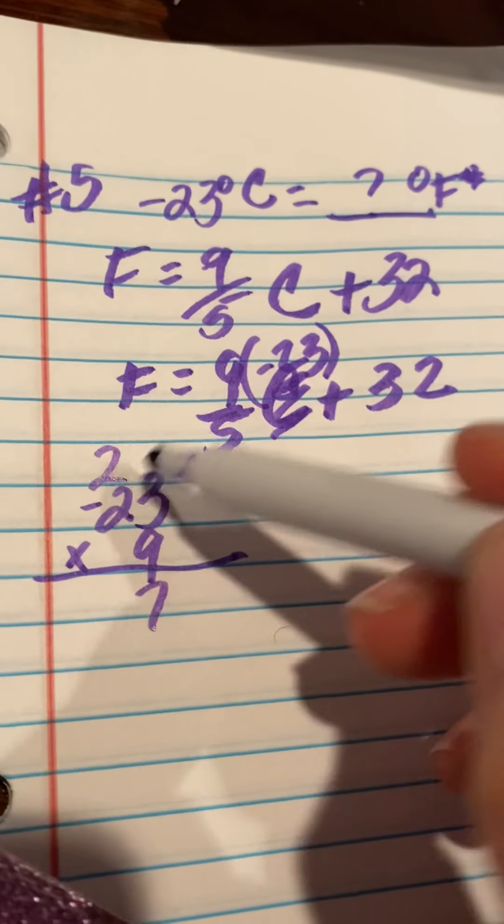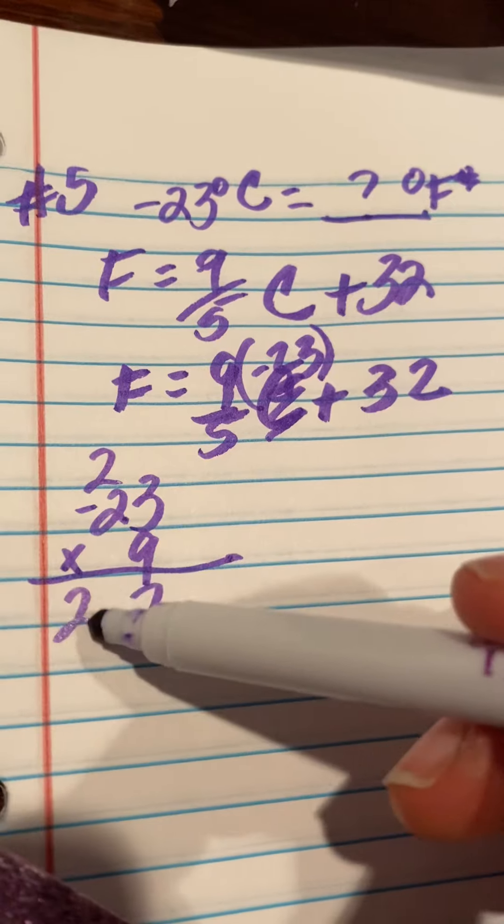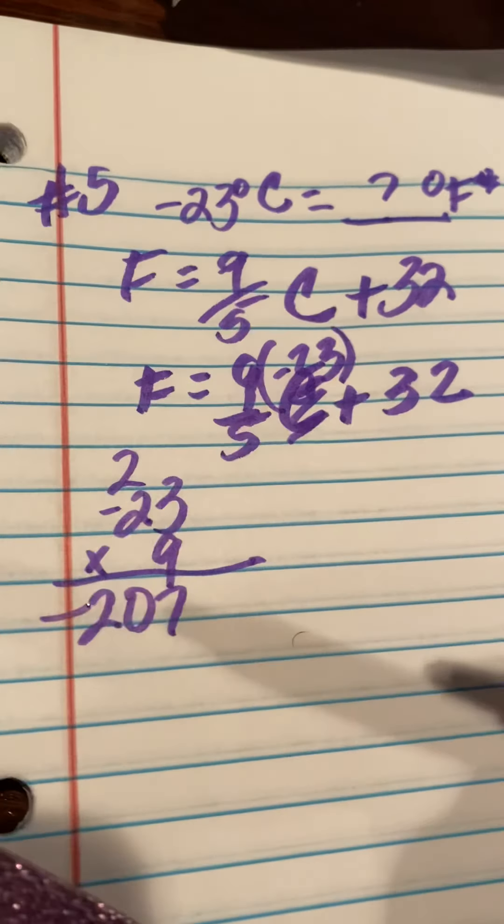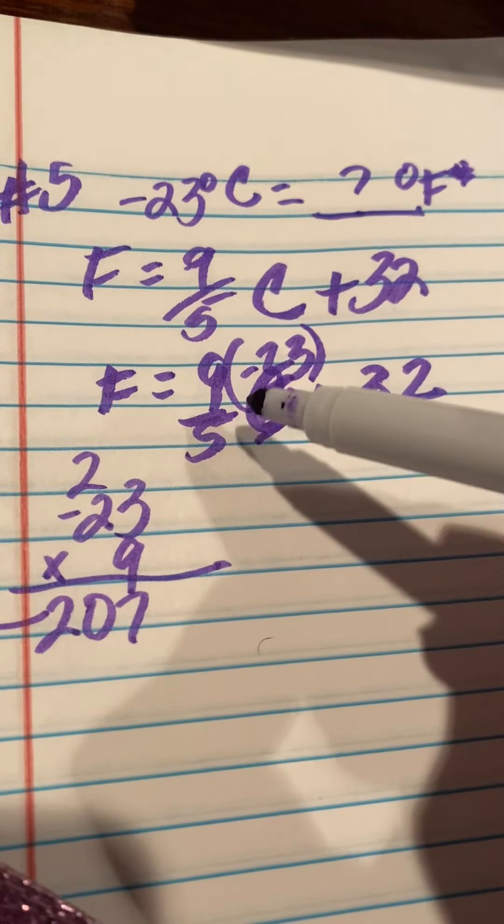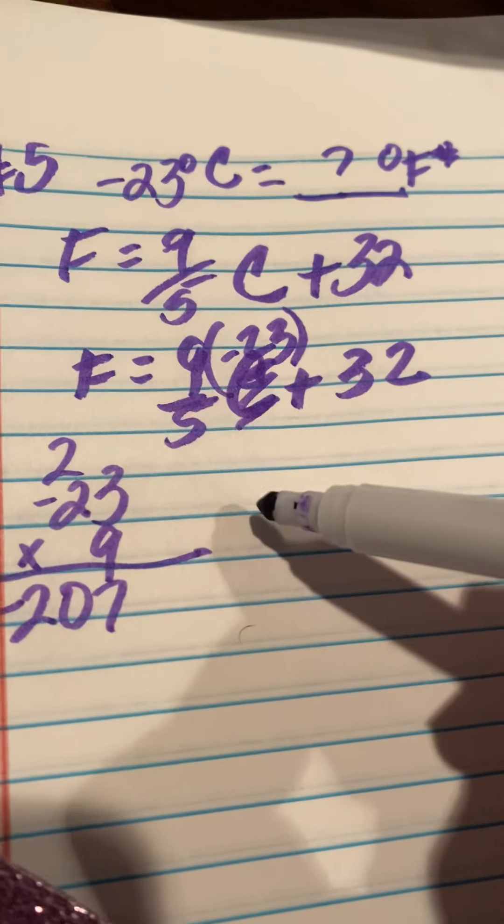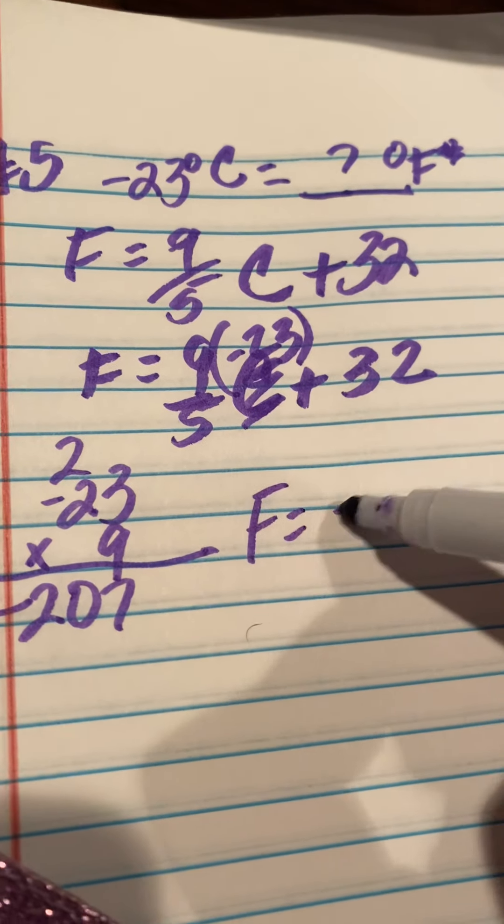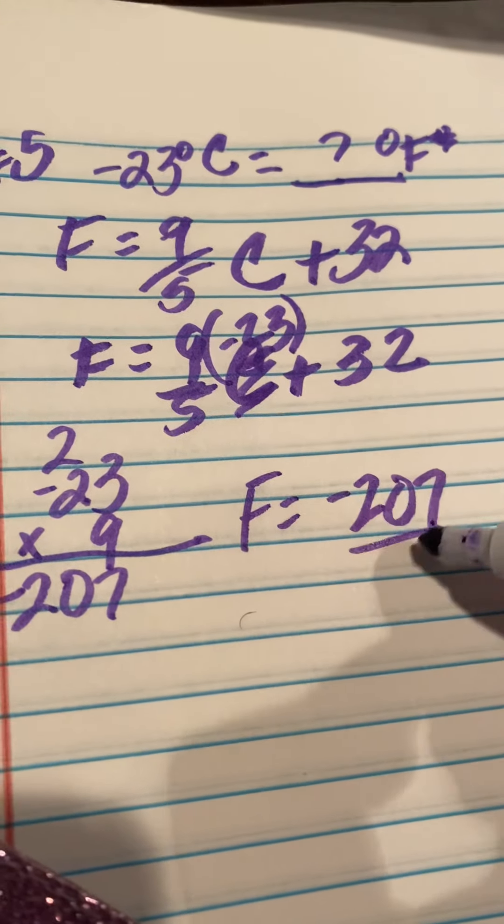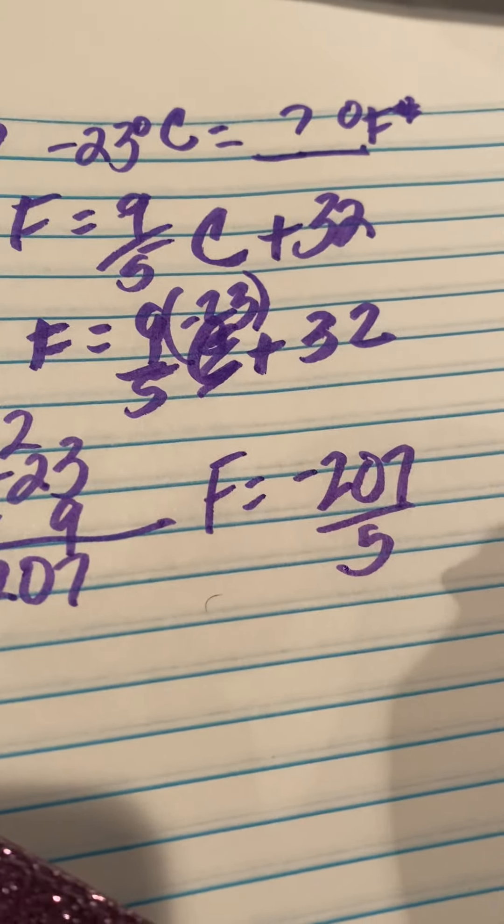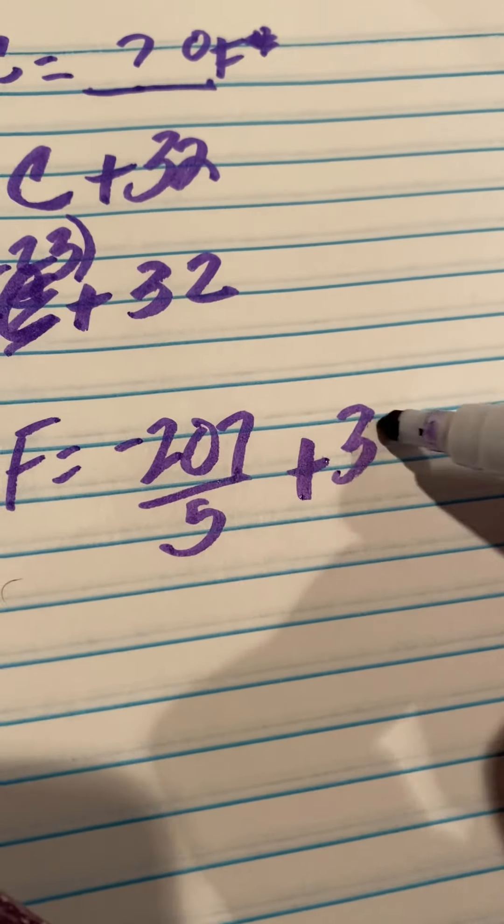Three times nine is 27. Two, two nines are 18. Two more is 20. And make that negative. So now I have an answer here. F is equal to negative 207 over 5 plus 32.